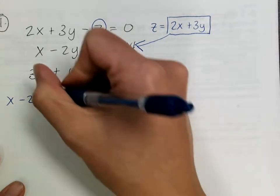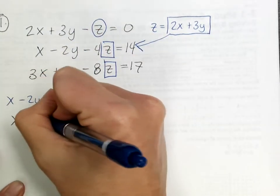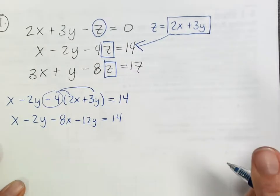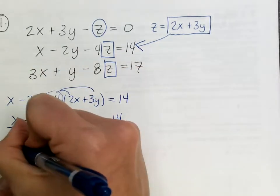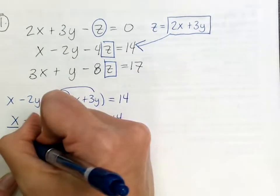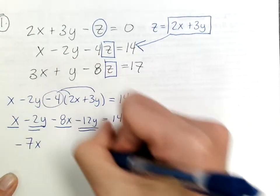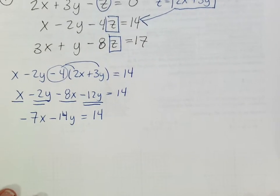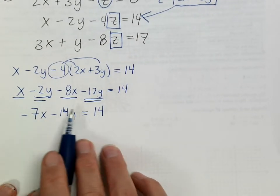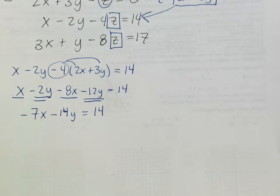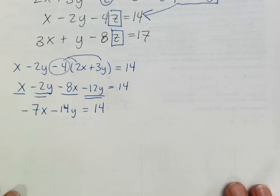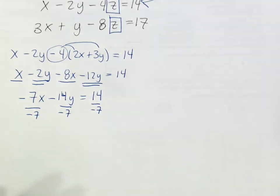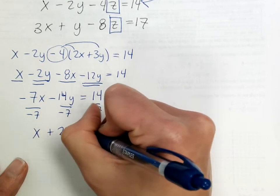Substituting into the first equation: x minus 2y minus 4(2x + 3y) = 14. Distributing the negative 4: x minus 2y minus 8x minus 12y = 14. Combining: negative 7x minus 14y = 14. Dividing everything by negative 7 simplifies this to x + 2y = negative 2.